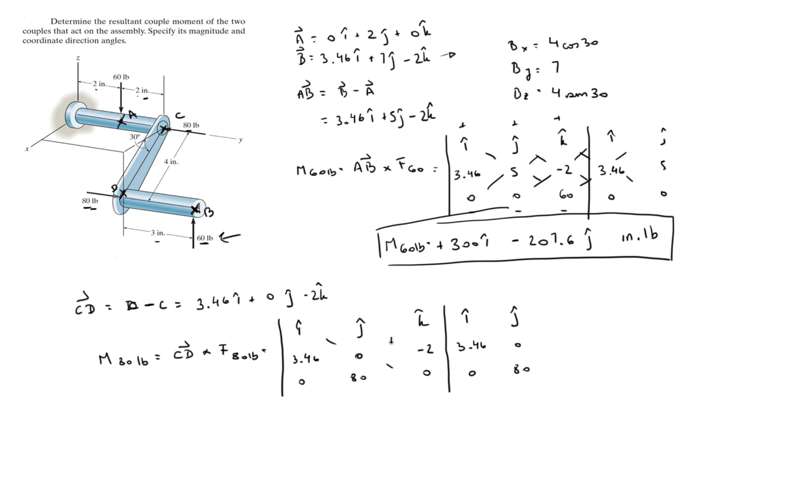So you do the positive diagonals. This is the only one because the rest are zeros. These are the negative diagonals. This is the only one because the rest are zeros, and that is equal to 276.8K plus 160I, and that is for the moment created by the 80.